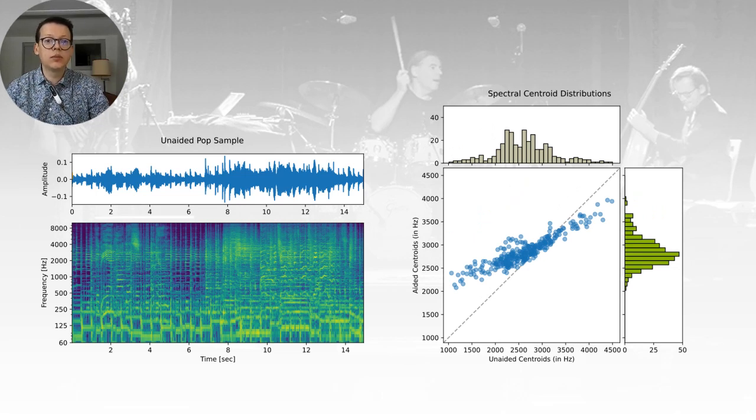Amplification effect on spectral information directly depends on the hearing aid frequency response. Here the amplification was defined for an N4 audiogram with more gain in the higher frequencies. The mean spectral centroid is therefore increased with amplification. However, the change from unaided to aided is not systematic. The effect of amplification is reduced when the unaided spectral centroid increases.